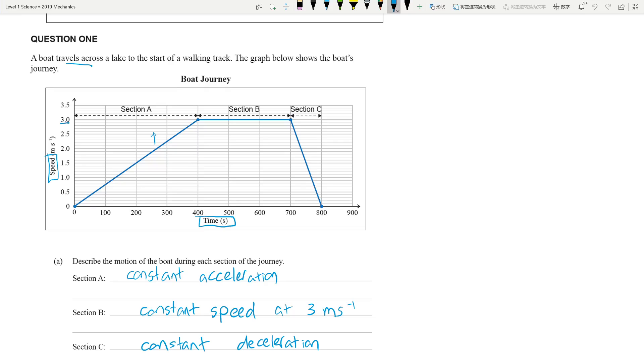Just before we move on, if I change the speed to distance, say you have the same graph but distance versus time, then Section A will be constant speed, Section B will be stationary, and Section C will be constant speed in the opposite direction. So the most important thing is you need to look at the axis title.